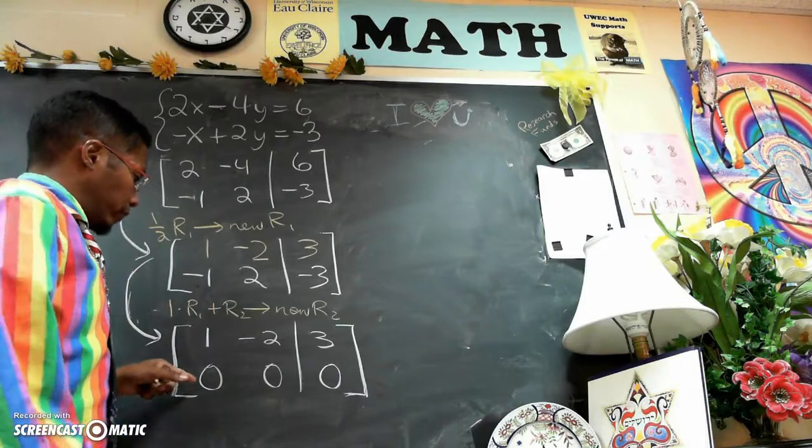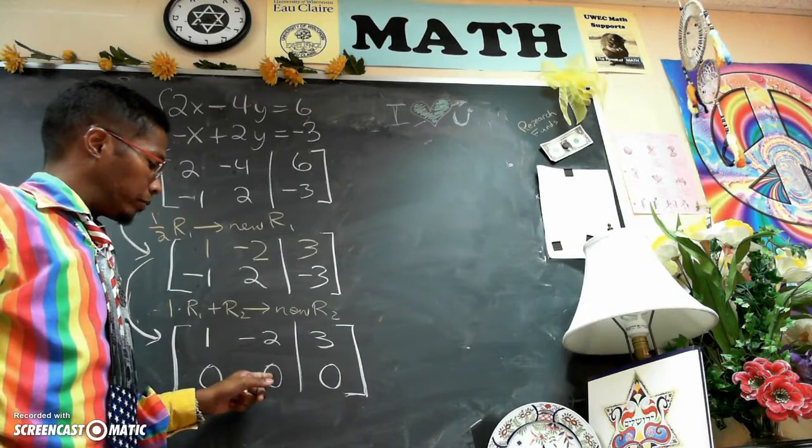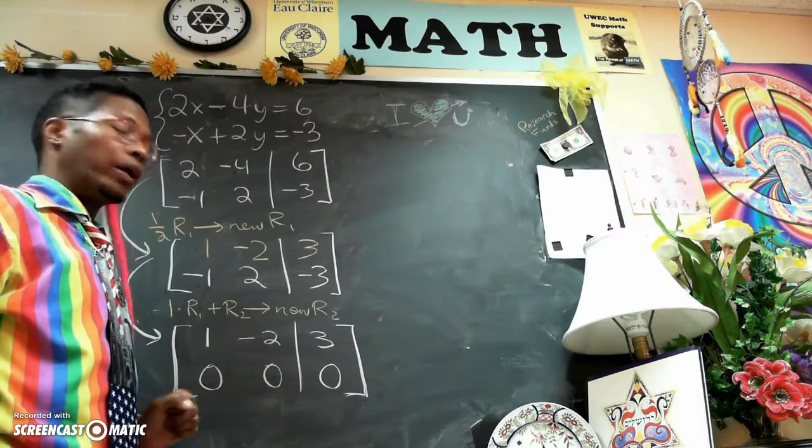So now we have to get a 1 here as the process of Gauss-Jordan row elimination. But there's nothing I can multiply this row with to get a 1 here. So now we know we're done.